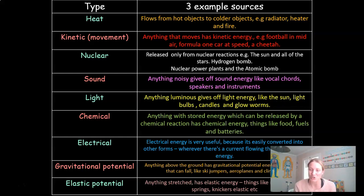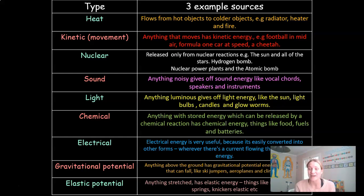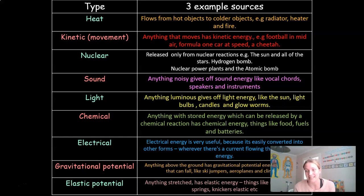Gravitational potential energy — the idea that what is up must come down. So anything that is above the ground that has the potential for gravity to act on it, we say has gravitational potential energy, or GPE. I used the example of a book on a high shelf or someone doing a skydive — they all have gravitational potential energy. And then the last one was elastic energy — anything that has been stretched has elastic energy, such as an elastic band or springs in your bed.